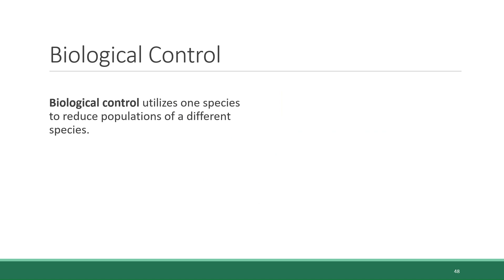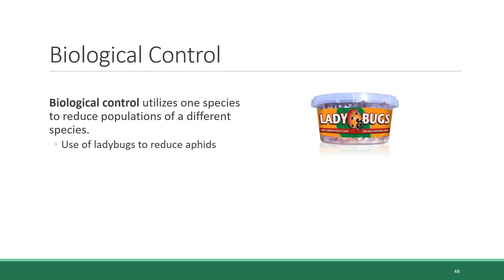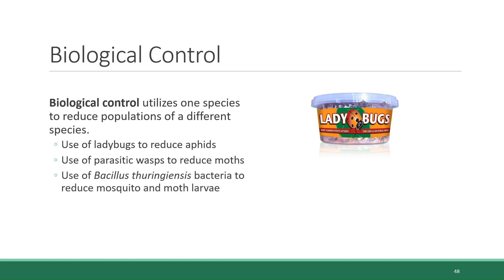If you're ever in the garden section of a hardware store or nursery in the springtime, you will see live ladybugs for sale — that's their purpose, to release in your garden and kill aphids. Other use cases include parasitic wasps being released to reduce moth populations, using Bacillus thuringiensis (BT bacteria) to reduce mosquito and moth larvae, and use of leaf beetles to go after a weed called purple loosestrife. The goal in all of these cases is not to eradicate the pest, but to knock down their population to levels where they don't have an economically significant impact on the harvest.